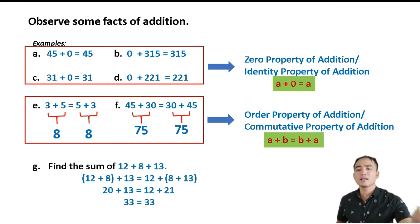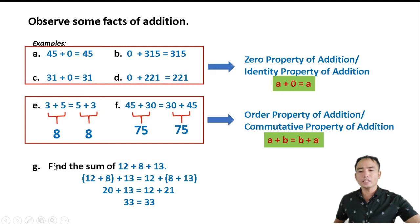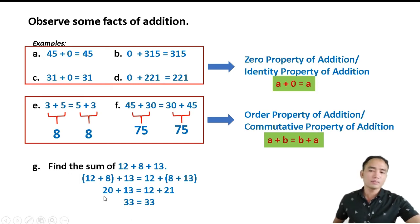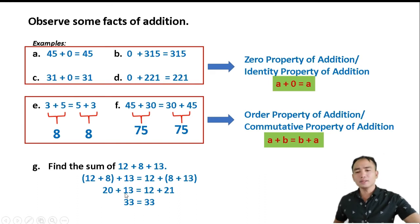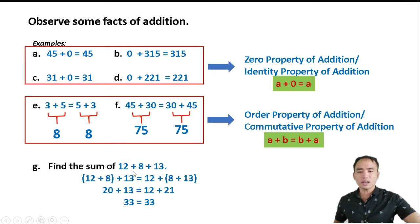Next, find the sum of 12 plus 8 plus 13. We can combine 12 and 8, which equals 20, and then add 13 — the answer is 33. Or we can also combine 8 and 13 first: 8 plus 13 is 21, plus 12 is also 33.